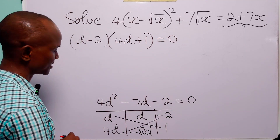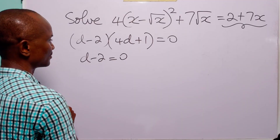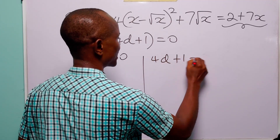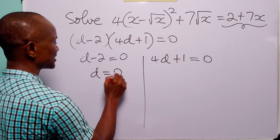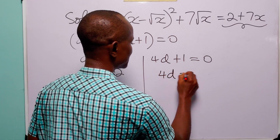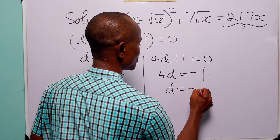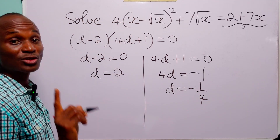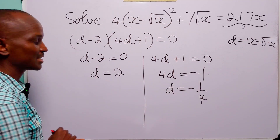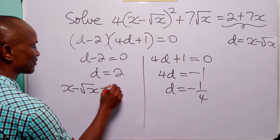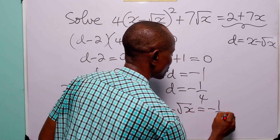And, of course, this is equal to 0. Now, you know that this simply means that either d minus 2 is equal to 0, or 4d plus 1 is equal to 0. So, when we add 2 to both sides of this equation, we have that d is equal to 2. From here, we have that 4d is equal to minus 1, and dividing both sides by 4, we have that d is equal to minus 1 over 4. But let us not forget that d is equal to x minus root x. So, this simply means that x minus root x is equal to 2, or x minus root x is equal to minus 1 over 4.